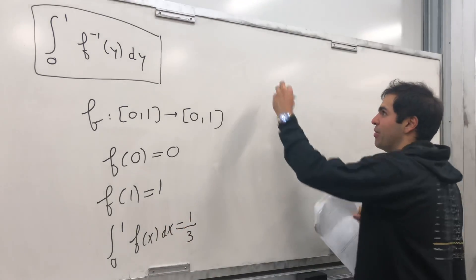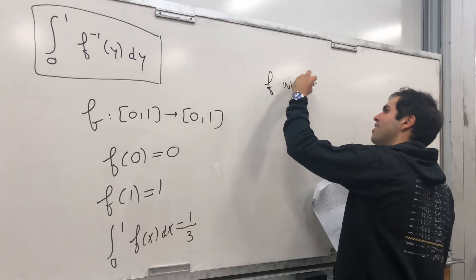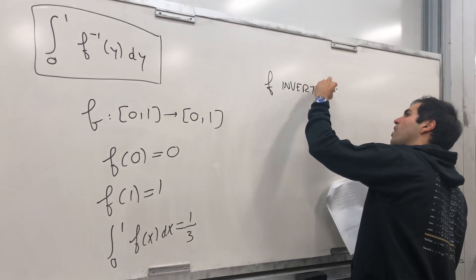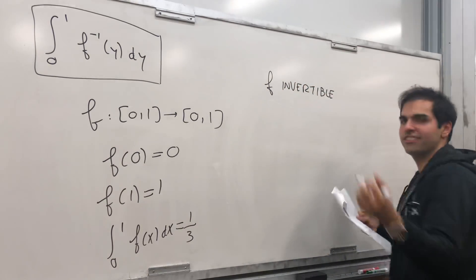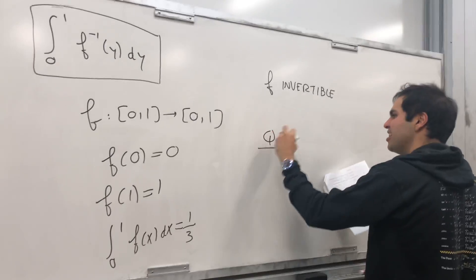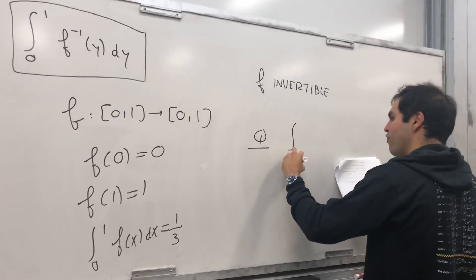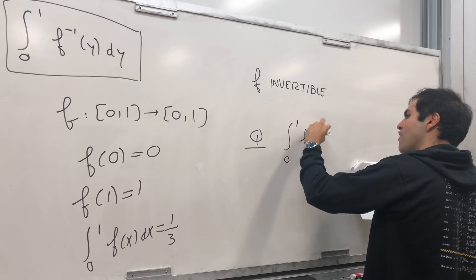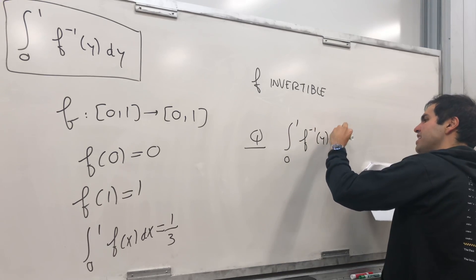and f is invertible, which means it's one-to-one and onto, and it has an inverse. And the question is, what is the value of the integral from 0 to 1 of f inverse of y dy?